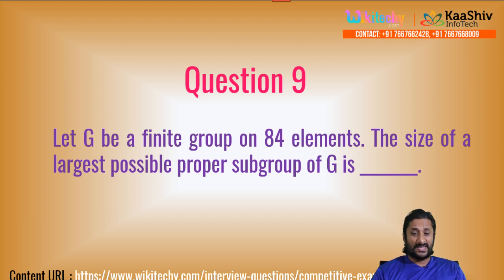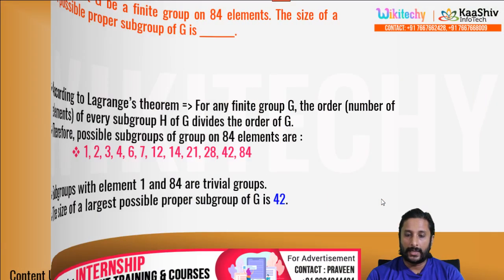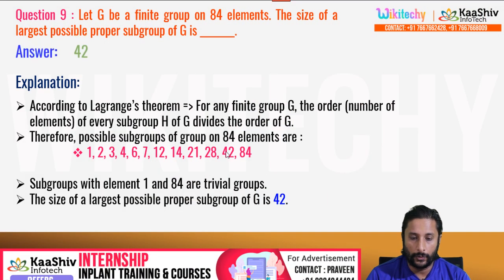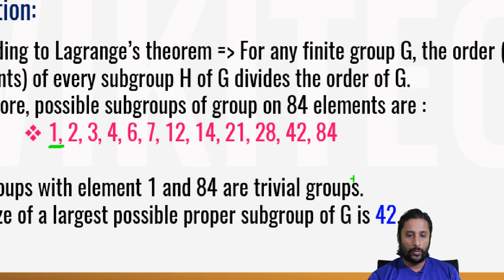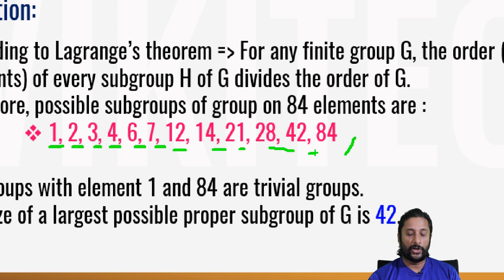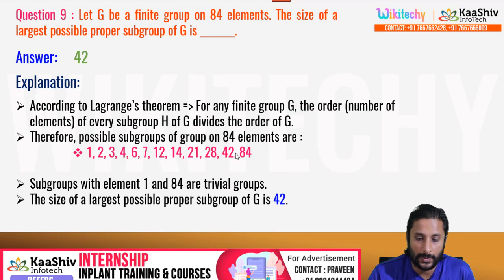Question 9: Let G be a finite group of 84 elements. What is the size of the largest possible proper subgroup? A subgroup's order must divide the group order (by Lagrange's theorem). The divisors of 84 are: 1, 2, 3, 4, 6, 7, 12, 14, 21, 28, 42. The largest proper divisor is 42. The answer is 42.